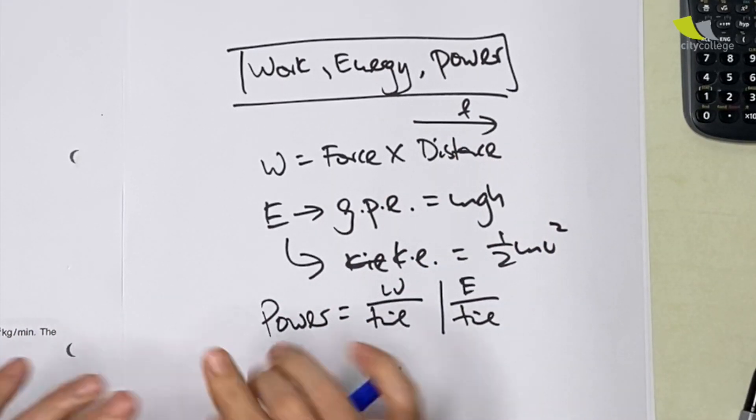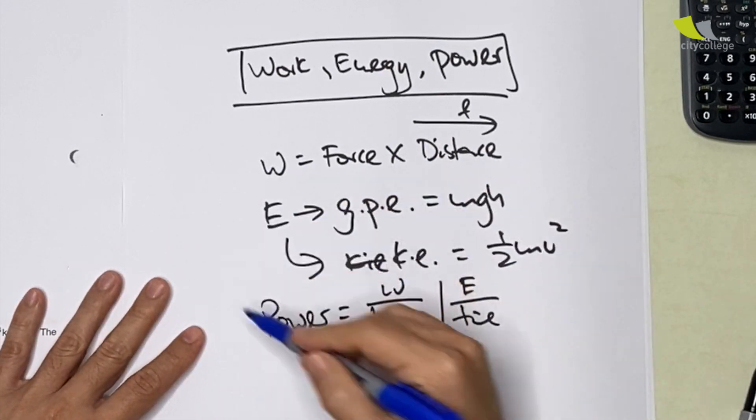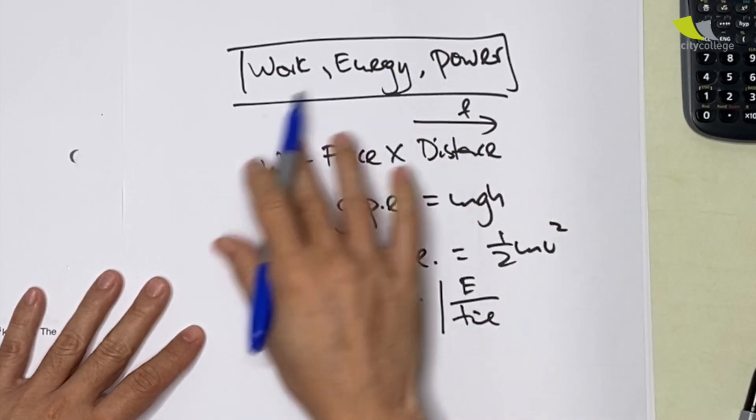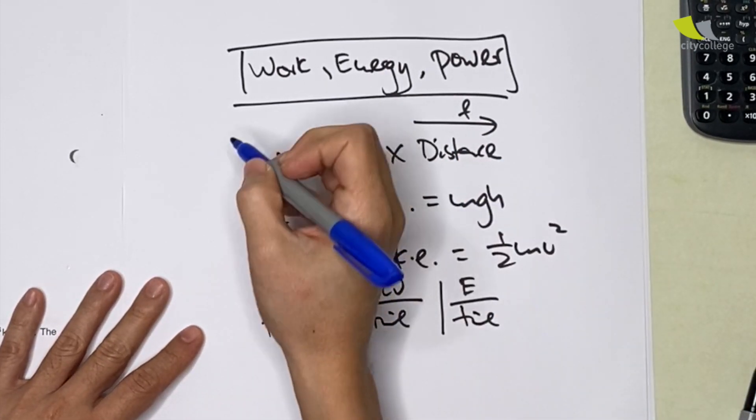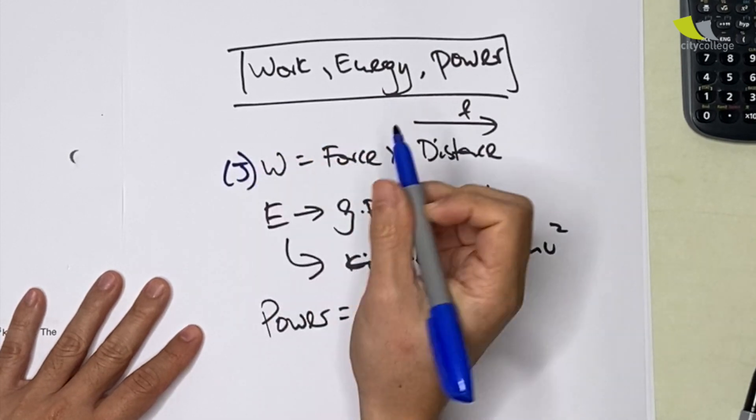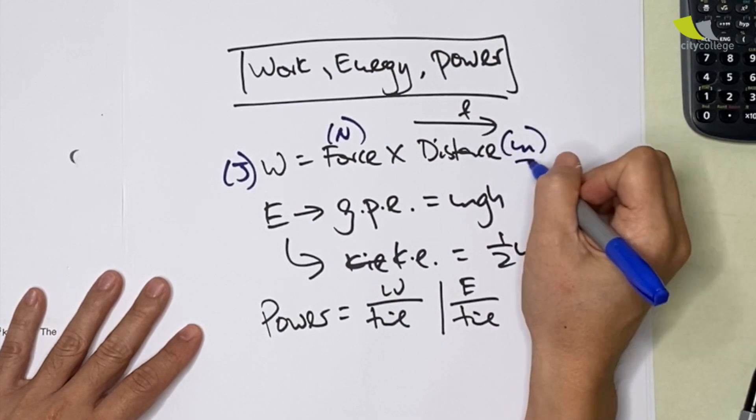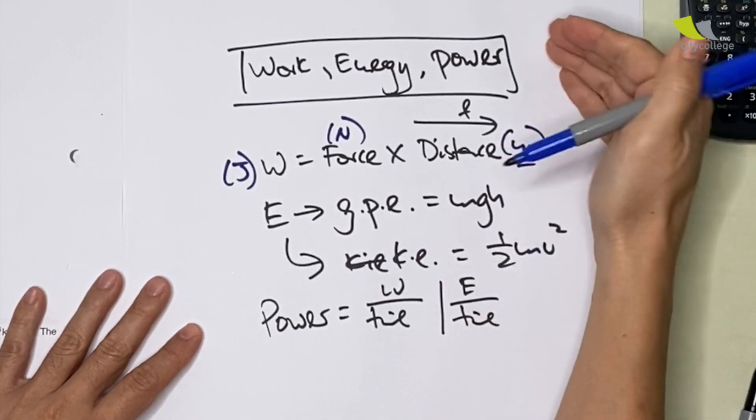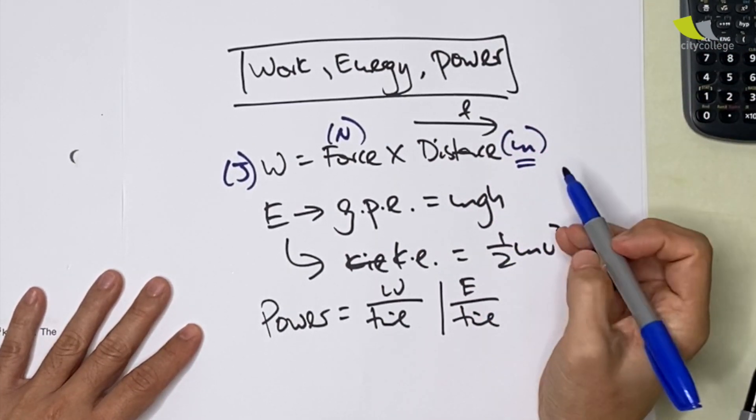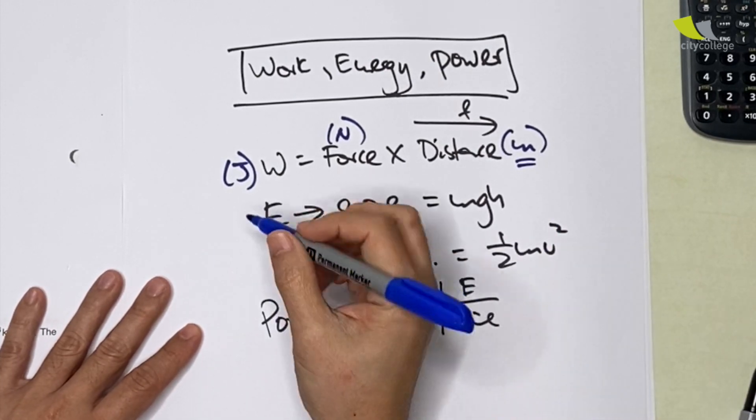The main thing that they constantly want to test you is if you remember the units that you need to use. So let's say work: if we want to calculate it in joules, force needs to be in newtons, distance needs to be in meters. So if the question is in cm or kilometers, you need to convert.